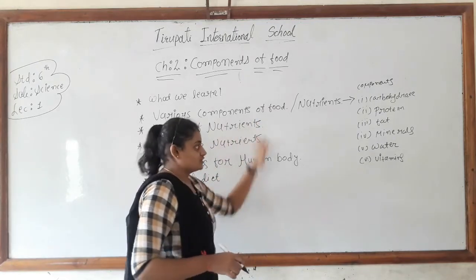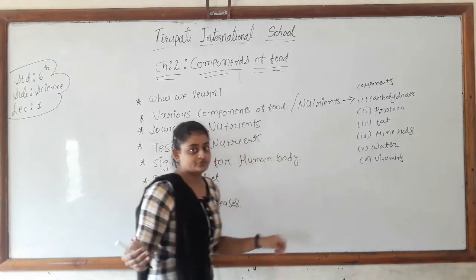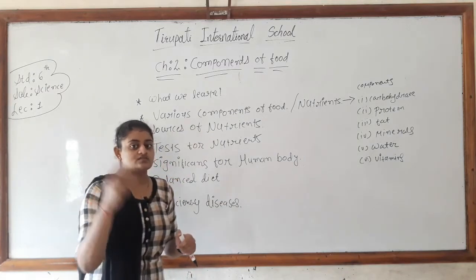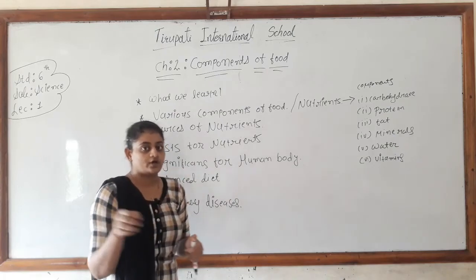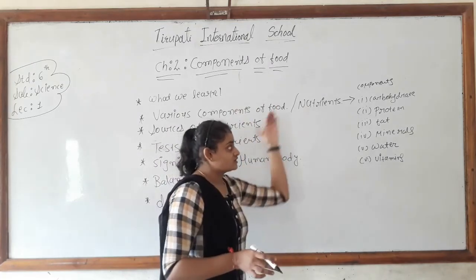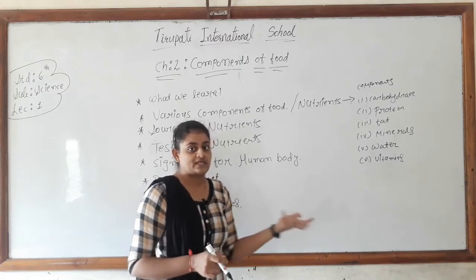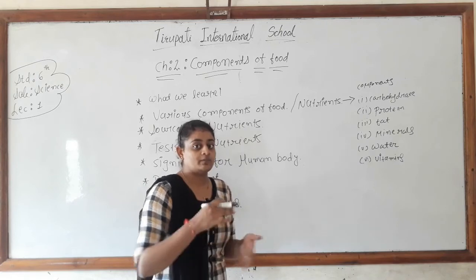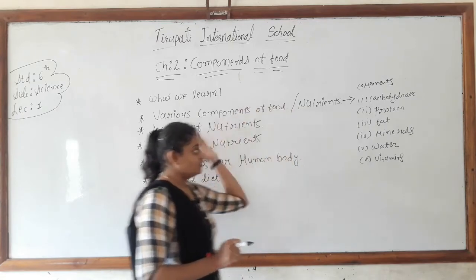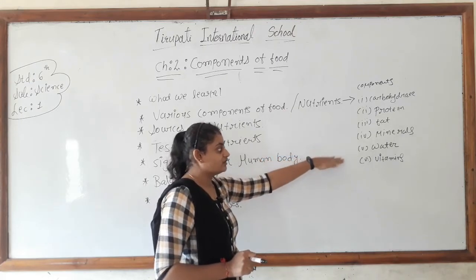The second topic is sources of nutrients. These nutrients are derived from different types of foods. There are two sources: plant products and animal products. For example, carbohydrates are obtained from wheat, maize, honey, banana, papaya, etc. We will learn about each component step by step — carbohydrates, protein, fat, minerals, water, and vitamins.